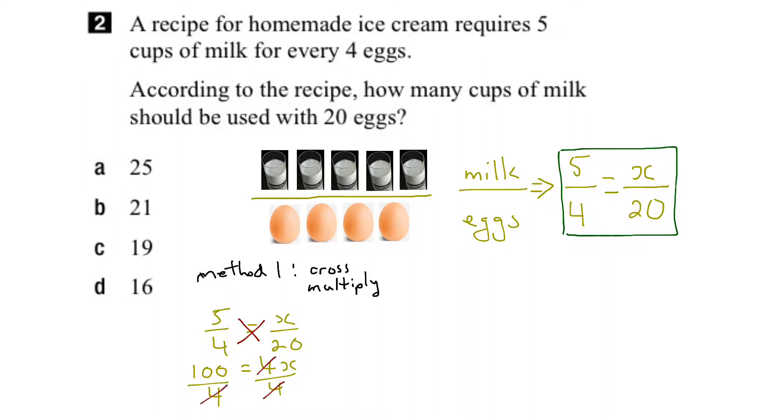And when we do that, we see that the 4s cancel out. And on this side, 4 goes into itself once, goes into 100 twenty-five times. So x equals 25. Or in other words, we're going to need 25 cups of milk if we use 20 eggs.